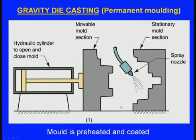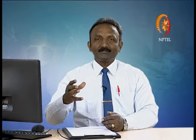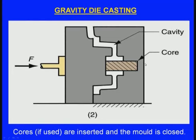The molten metal is poured from a crucible into the mould cavity where it solidifies. The molten metal enters the cavity, flows around the core, and comes down. After some time the molten metal solidifies. We can see the pouring of molten metal into the gravity cast mould — there are two dies, and after solidification the casting is ejected.